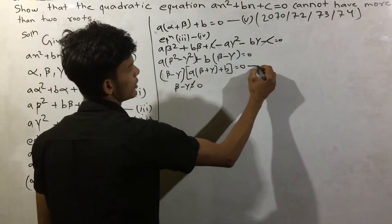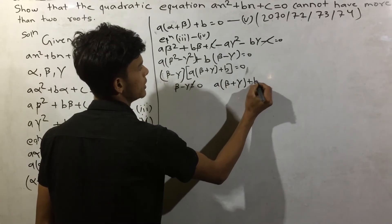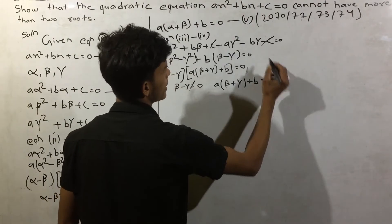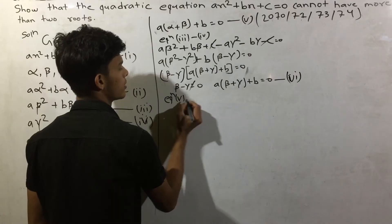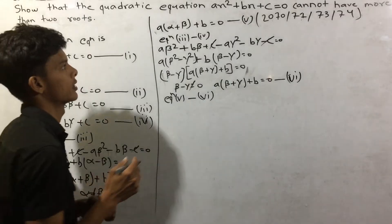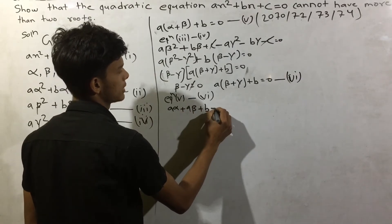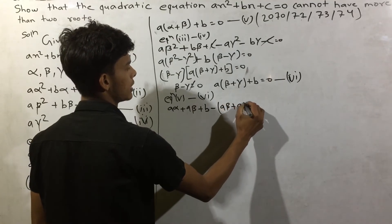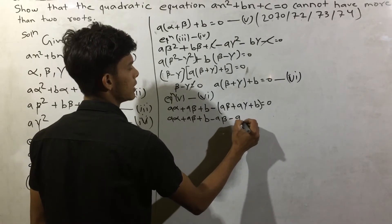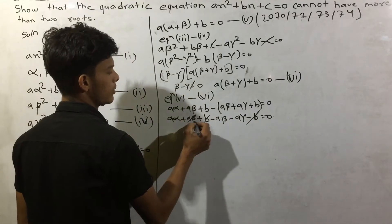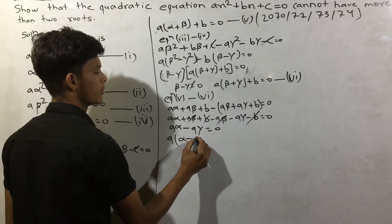a beta plus gamma plus b equals zero — this is equation 6. Equation 5 minus equation 6: subtract this equation. a alpha plus a beta plus b minus a beta minus a gamma minus b is equal to zero. Therefore a alpha minus a gamma equals zero.